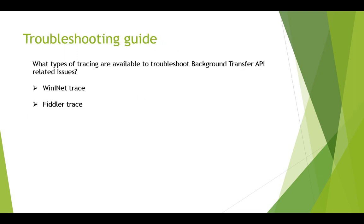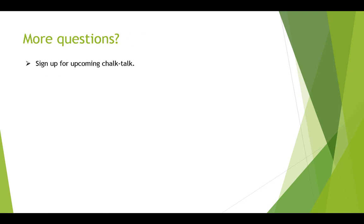For troubleshooting background transfer API issues, you can collect a WinINet ETW trace or a Fiddler trace to understand the actual HTTP requests and responses. Hopefully, this video gives you a brief introduction of using and debugging background transfer API issues in your Windows Store app. Make sure that you sign up for the upcoming Chalk Talk where you can bring in your questions and get to discuss your issues. Thank you for taking the time to watch this video.